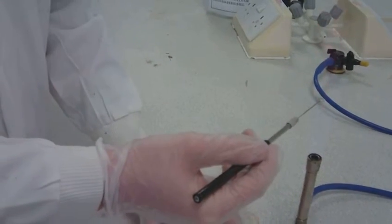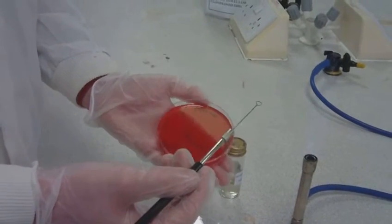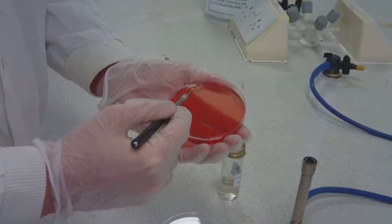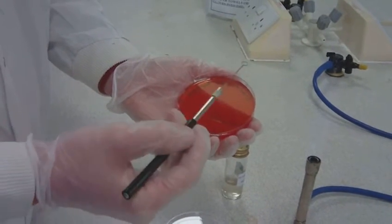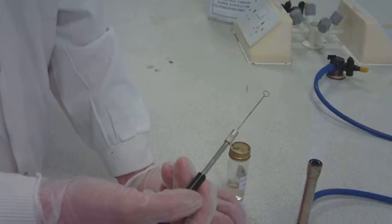Re-flame the loop and then in the last quarter of the agar you need to streak the bacterium in a zigzag formation from the outside of the agar towards the centre. Be careful not to streak the bacterium where you previously streaked as it will not give the desired separation. The zigzag of the bacterium should not touch the sides of the petri dish.